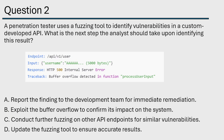Question number two. A penetration tester uses a fuzzing tool to identify vulnerabilities in a custom-developed API. What is the next step the analyst should take upon identifying this result? We see our endpoint and user, some endpoint information, a response — looks like HTTP 500 internal server error — and then traceback: buffer overflow detected in function process_user_input.